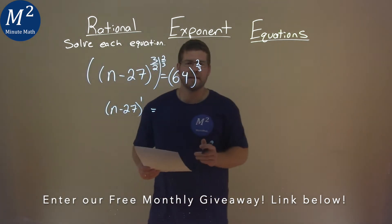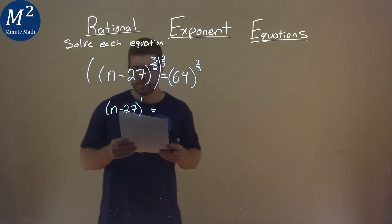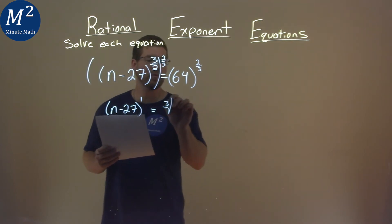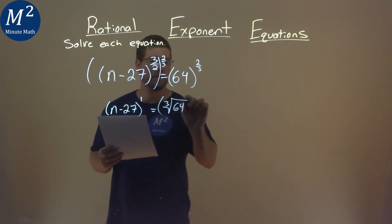Now, to the right-hand side. 64 to the two-thirds power is the same thing as the third root of 64, all squared.